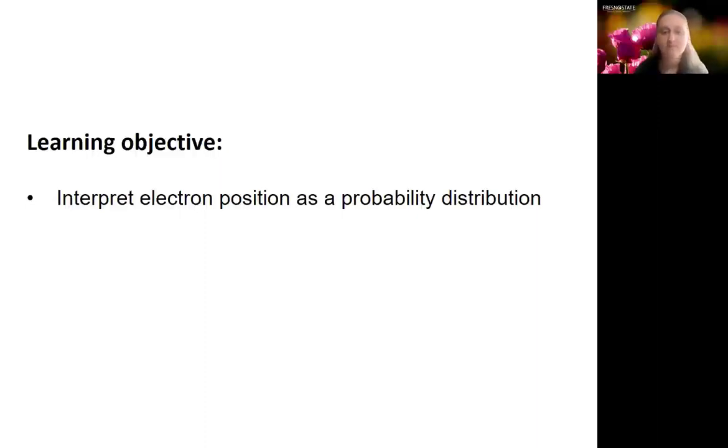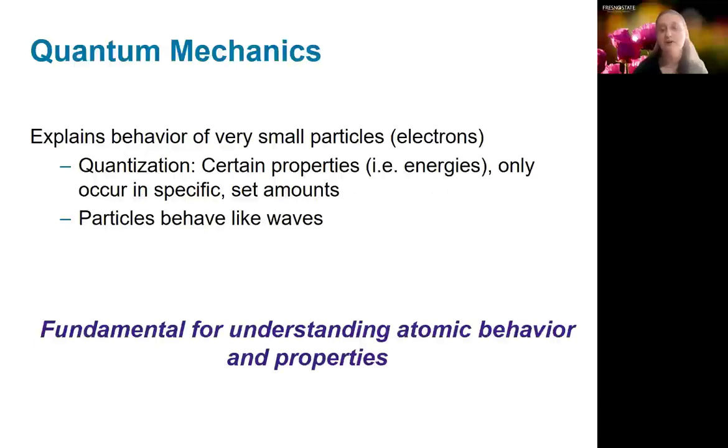As you may recall, electrons are extremely small particles and therefore they have to be treated using quantum mechanics. This is the system of physics that allows us to explain the behavior of very small particles. For chemistry, we're particularly interested in electrons.